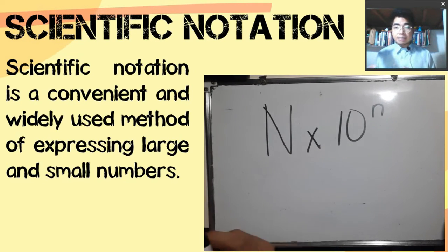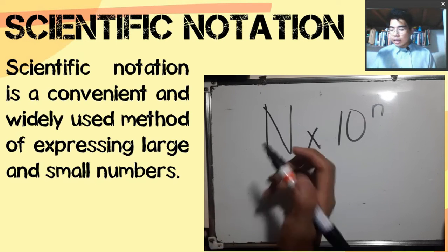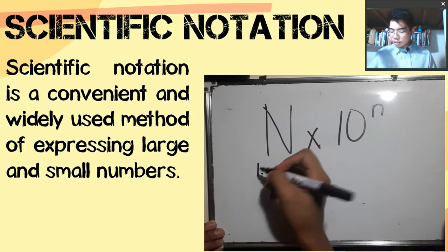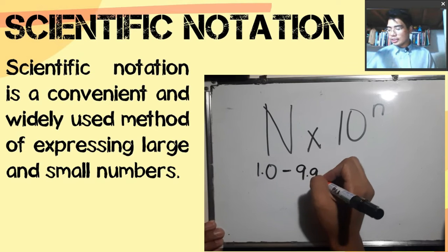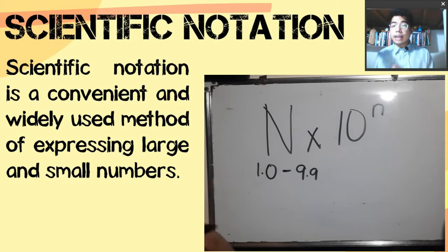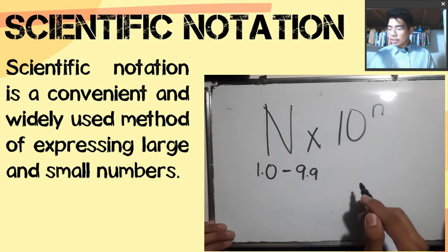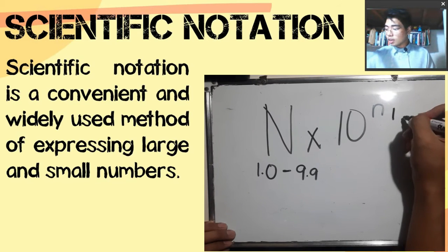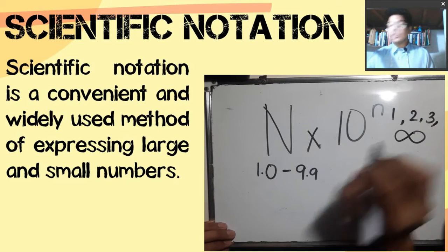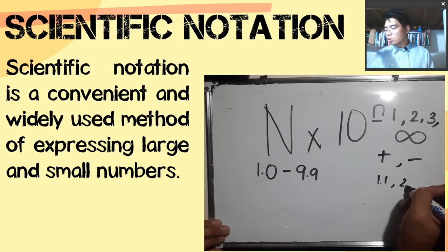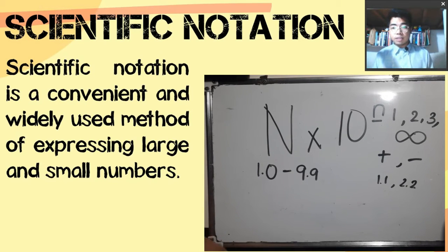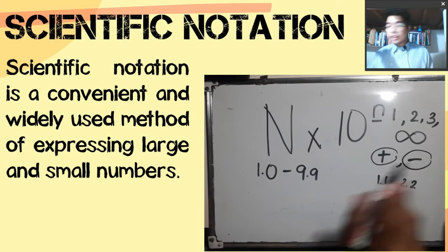Capital letter N is any number between 1 and 10 — specifically, values ranging from 1.0 to 9.9. For small letter n, these are whole numbers starting from 1, 2, 3, up to infinity. The values we include in the exponent are always whole numbers, either positive or negative integers. We will not include values like 1.1 or 2.2. The exponent small letter n will always be a positive or negative integer.